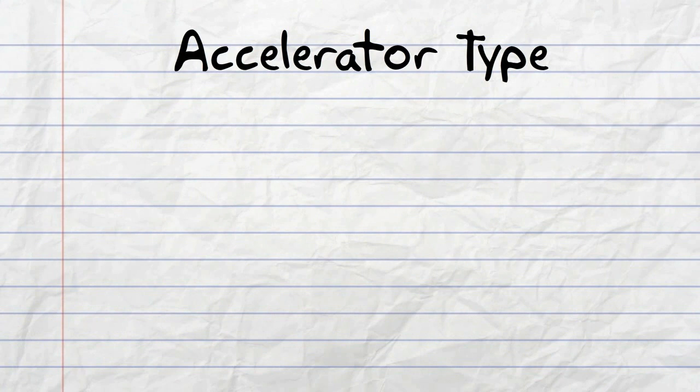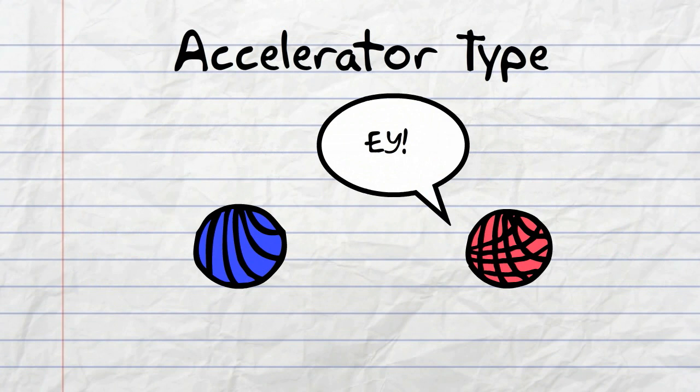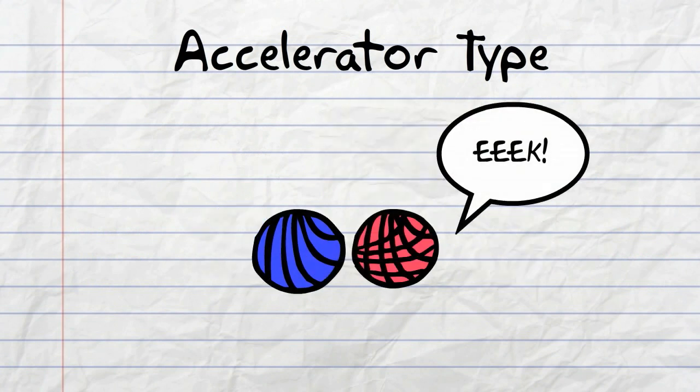In accelerator-type sources, neutrons can be produced by bombarding suitable targets with positive ions.